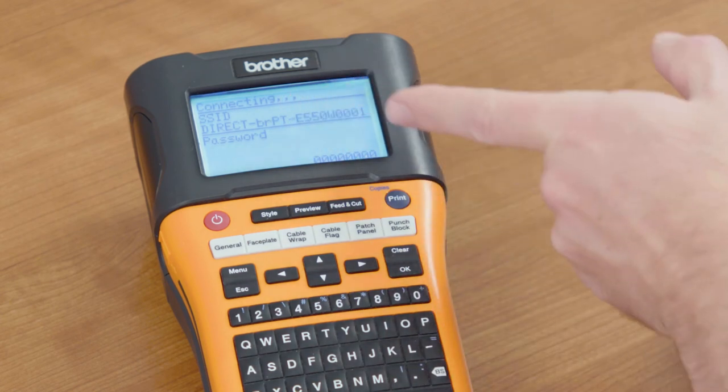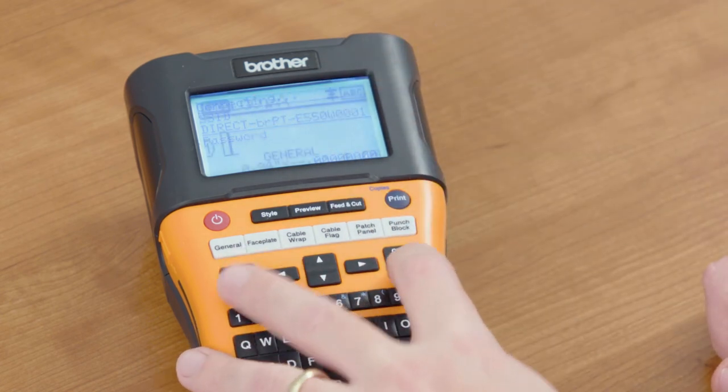Now you'll see the machine is connecting. The SSID, the password, everything is there. Select OK.